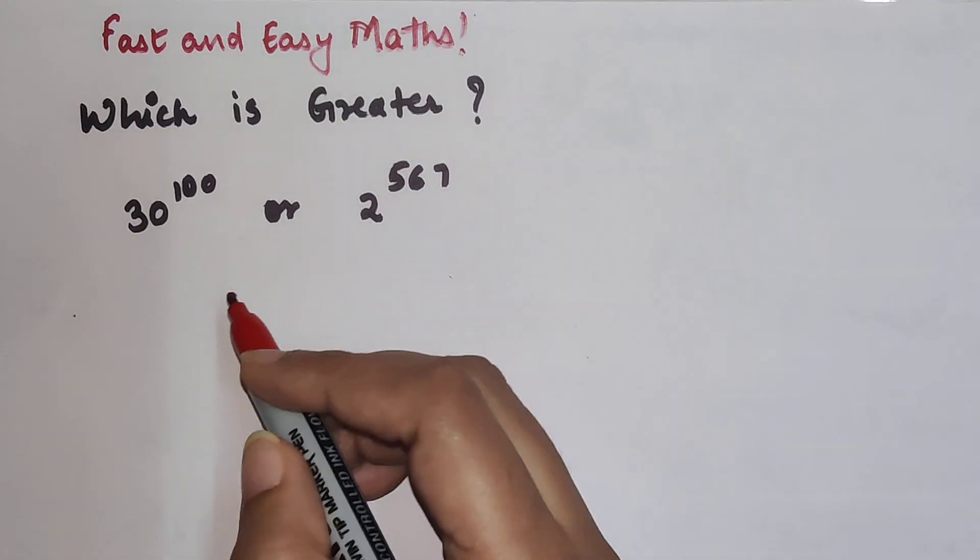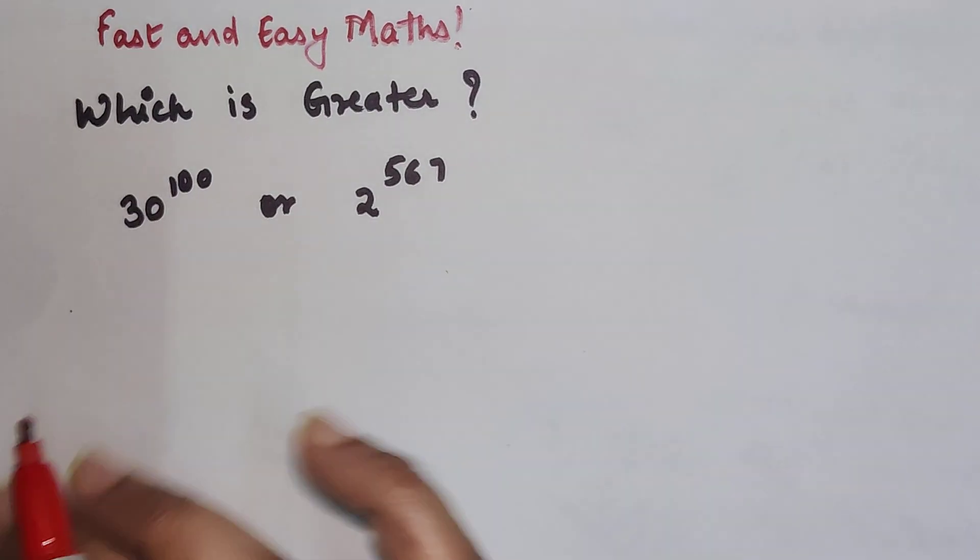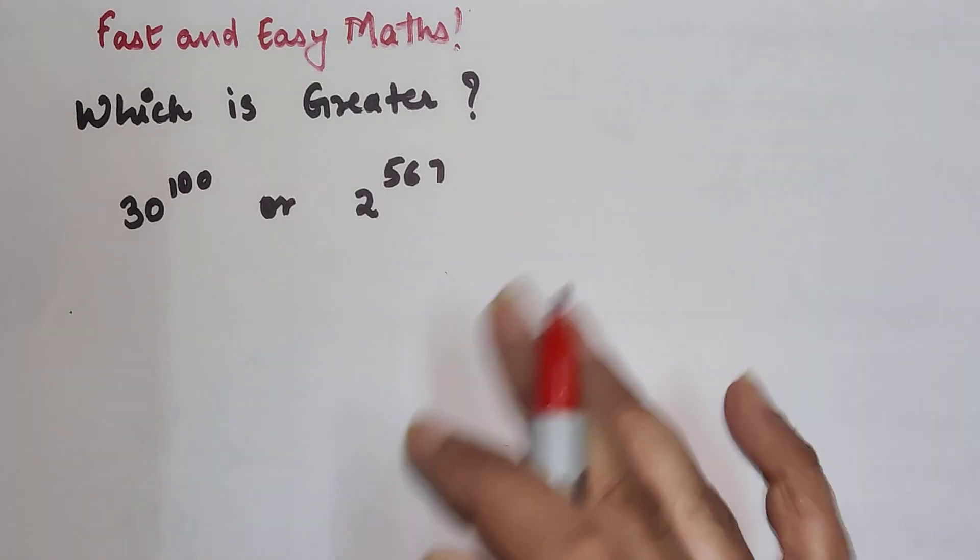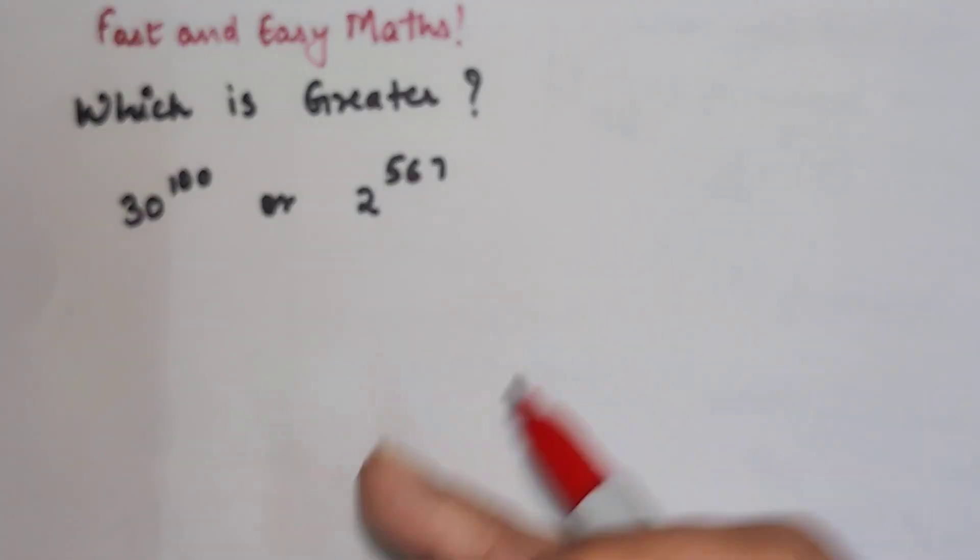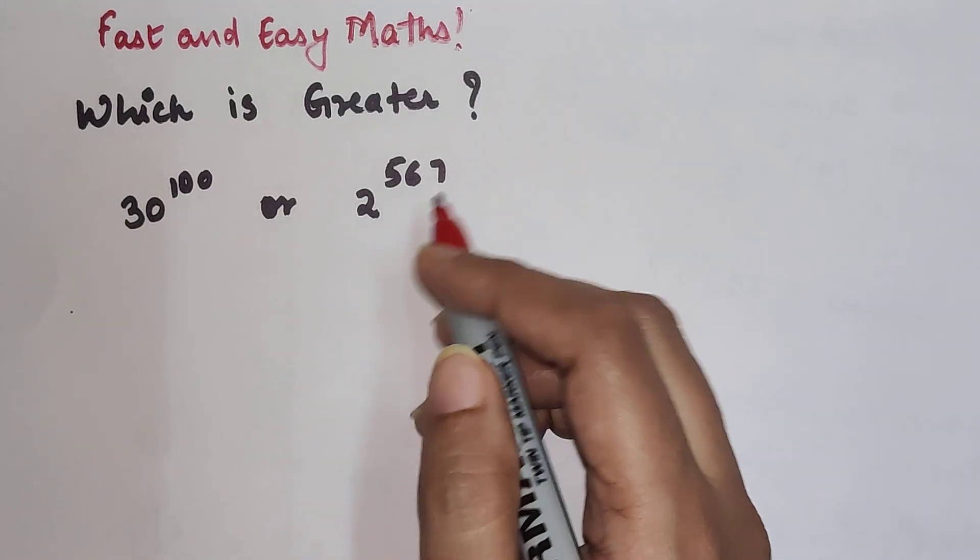So many people start with 30 and they try to put it in terms of 2. That's never going to work. But in such a case what you should do is you should try to find the powers of 2 which are closer to 30.